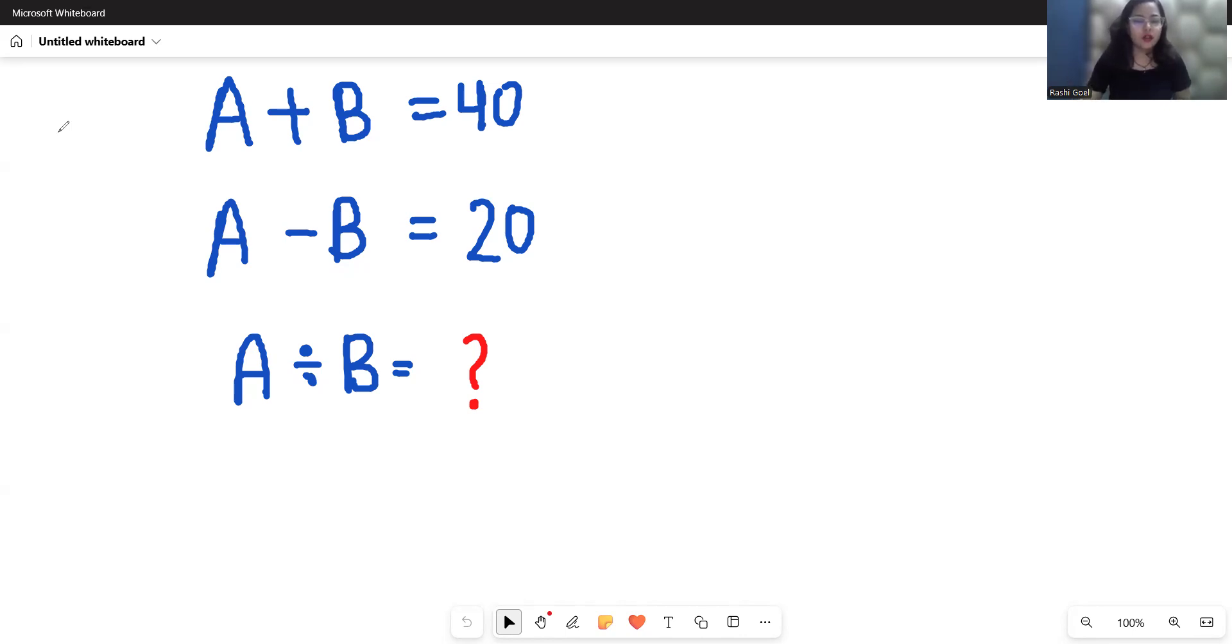Now take a good look at this linear equation. A plus B is 40, so I am considering this as equation number one, and A minus B is 20 as equation number two. Now add both equations.